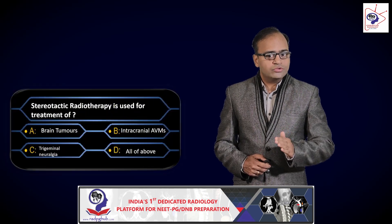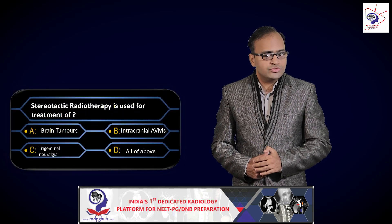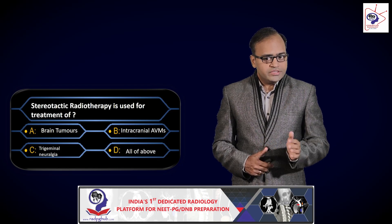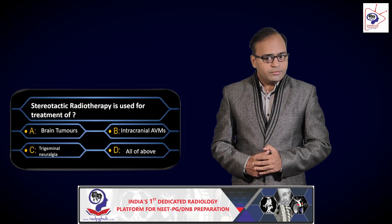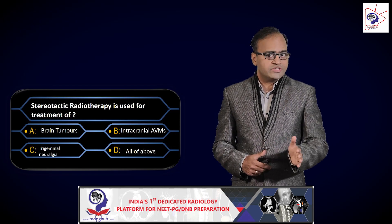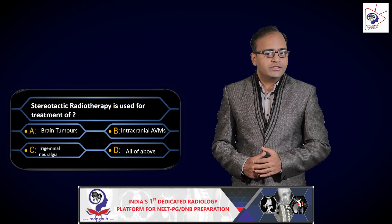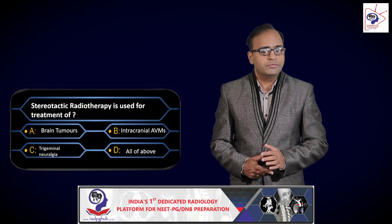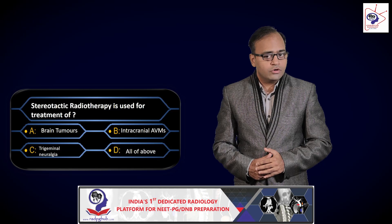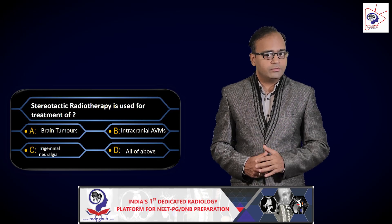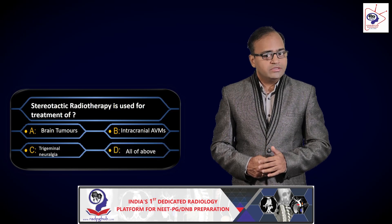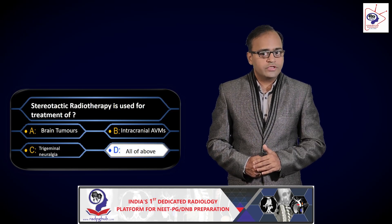Another question asked: stereotactic radiotherapy is used for the treatment of — options were brain tumors, intracranial AV malformations, trigeminal neuralgia, or all of the above. We have just discussed that stereotactic radiotherapy is used for the treatment of brain tumors, but it is also used for intracranial AV malformations and for trigeminal neuralgia as well. The answer to this question is all of the above.